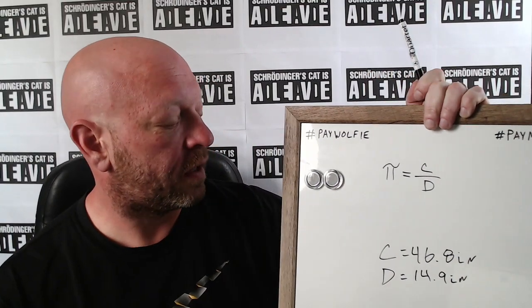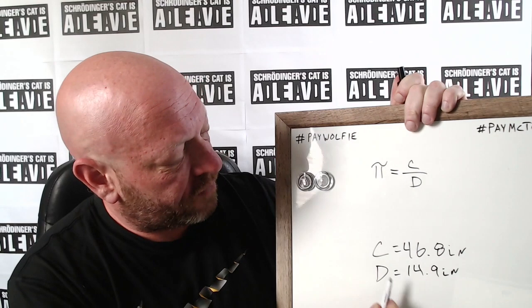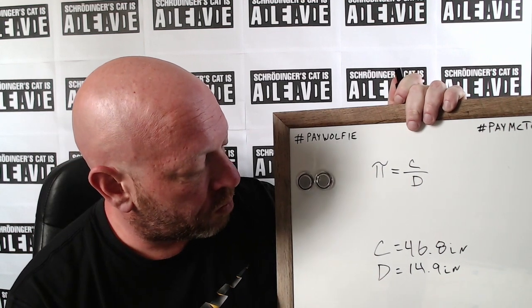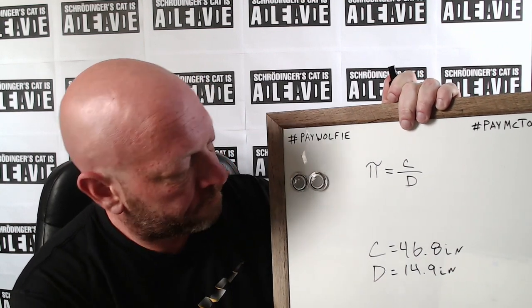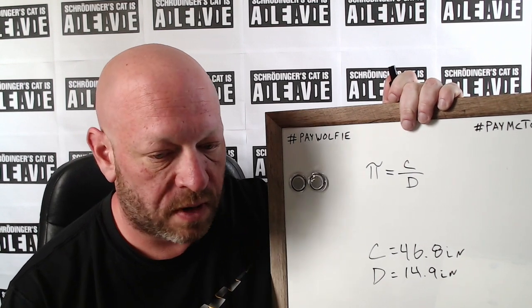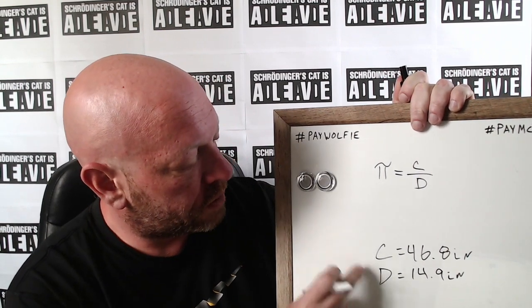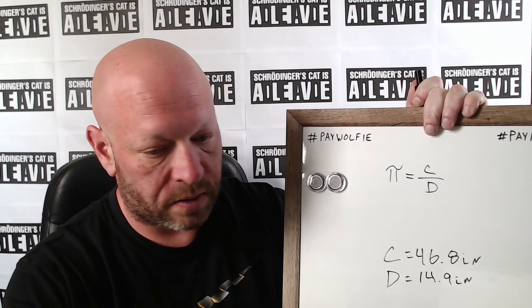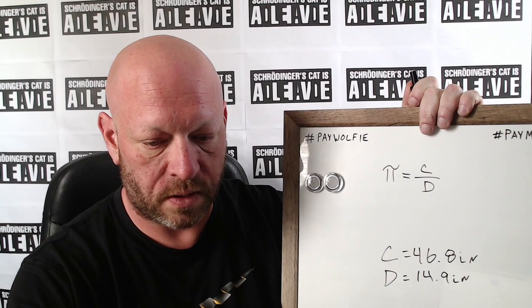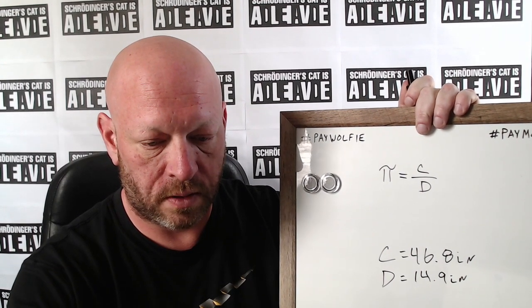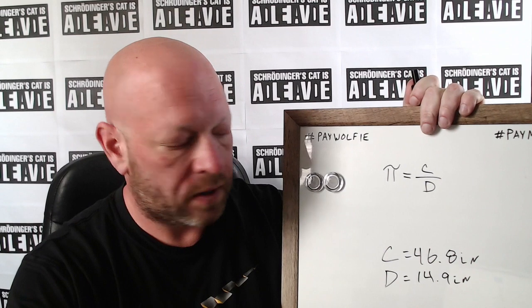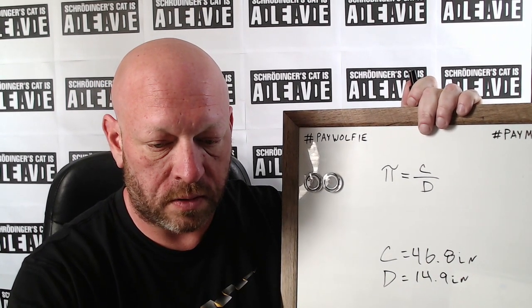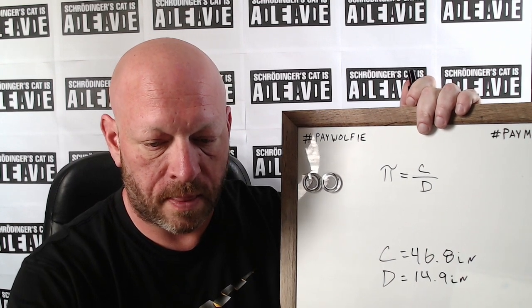Now that we have our data, let's see how we did. For circumference we came up with 46.8 inches, and for diameter 14.9 inches. Our units are both in inches, so they're the same — we don't have to do any conversions. We can just pop this directly into a calculator. Let's do 46.8 divided by 14.9 equals...